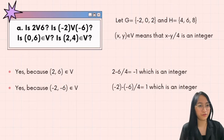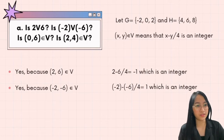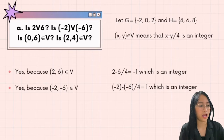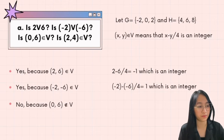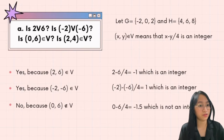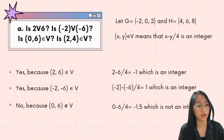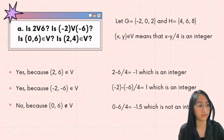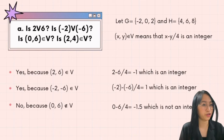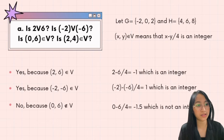For the third question: is (0, 6) an element of relation V? The answer is no, because (0, 6) is not an element of V. Our x is 0 and our y is 6, so 0 minus 6 over 4 equals negative 1.5, which is not an integer.